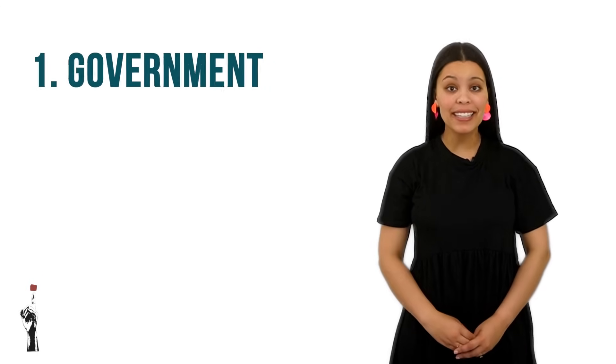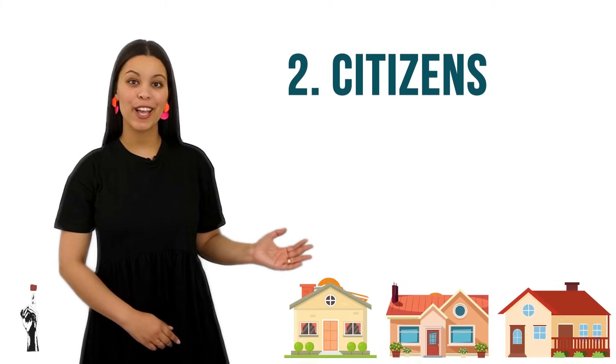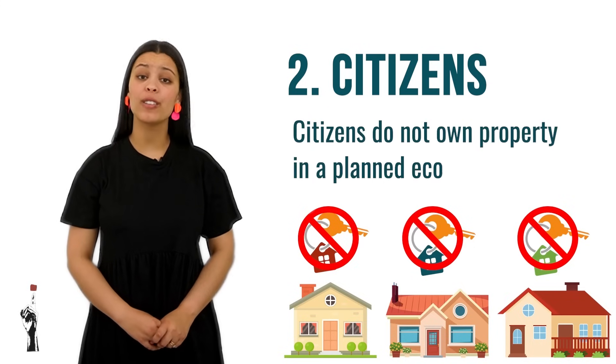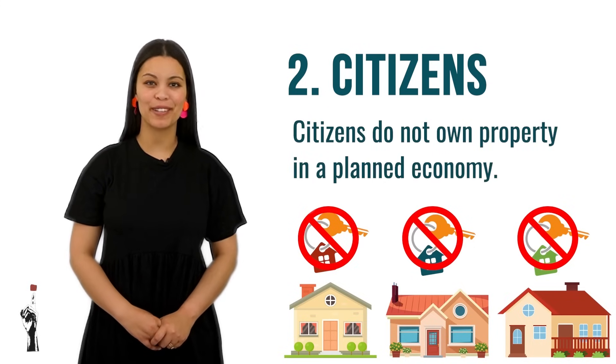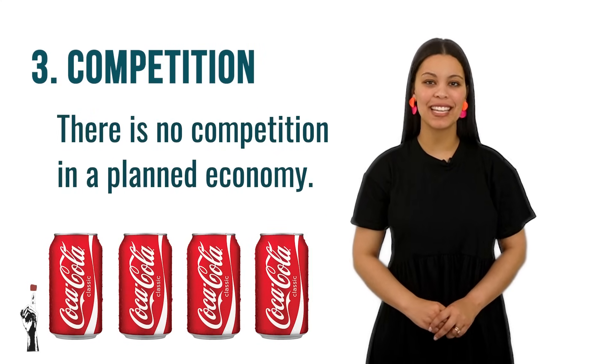The first keyword is 'government,' reminding us that the government owns all the resources in the country. Our second keyword is 'citizens,' to remind us that citizens are not allowed to own property in a planned economy. Our final keyword is 'competition,' reminding us that there is no competition in a planned economy. So let's recall: government, citizens, and competition. Well done! Let's move on to the advantages of a planned economy.